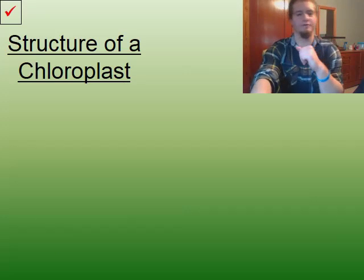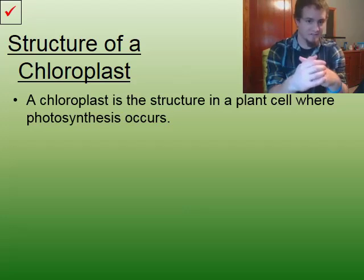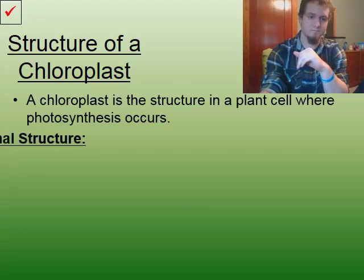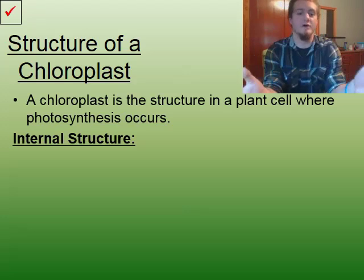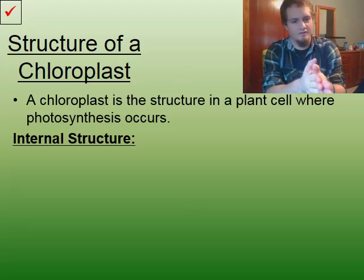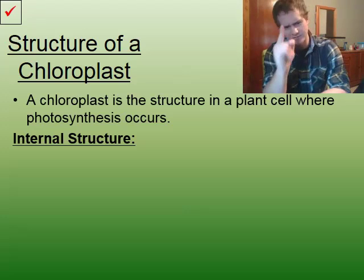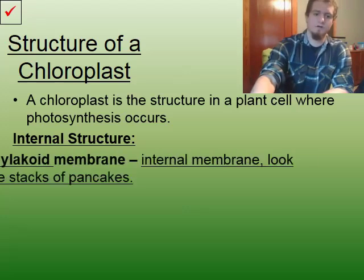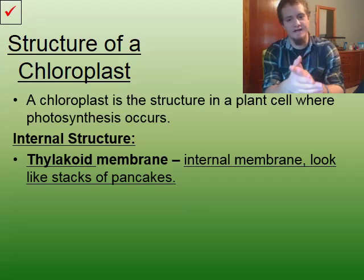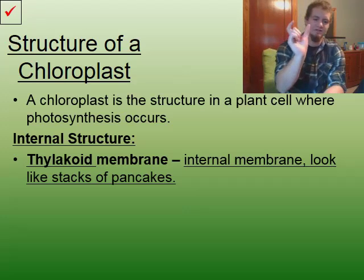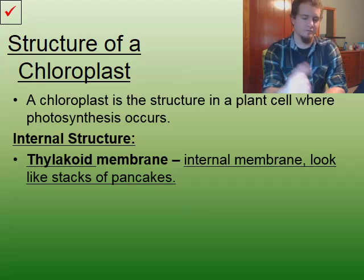Now, the structure of a chloroplast. A chloroplast is the structure in a plant cell where photosynthesis occurs. There's an internal structure here that we're going to explore in a different way — we're going to compare a chloroplast to breakfast, specifically a pancake. The first thing is the thylakoid, or the thylakoid membrane. It's the internal membrane, and these are going to look like tiny little green pancakes inside of the chloroplast.